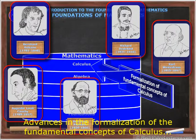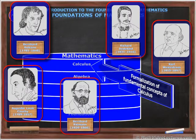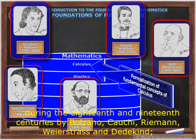advances in the formalization of the fundamental concepts of calculus during the 18th and 19th centuries by Bolzano, Cauchy, Riemann, Weierstrass and Dedekind,